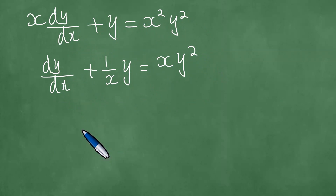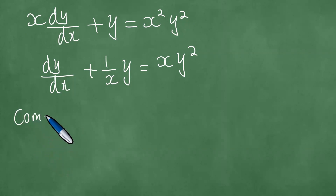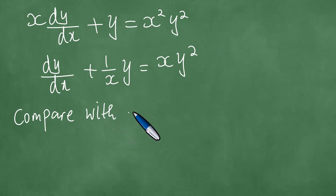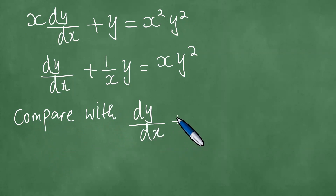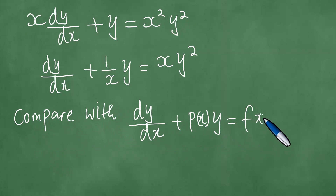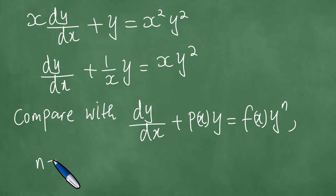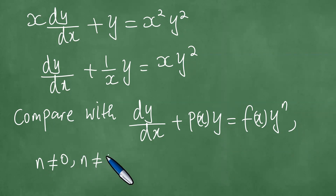We have transformed the differential equation into standard form. At this point, we compare with dy/dx plus P(x) y, which equals f(x) y to the power n, which is valid for integers n. We recommend its use when n is not zero and when n is not one, because when n is zero or one, this becomes a linear equation.